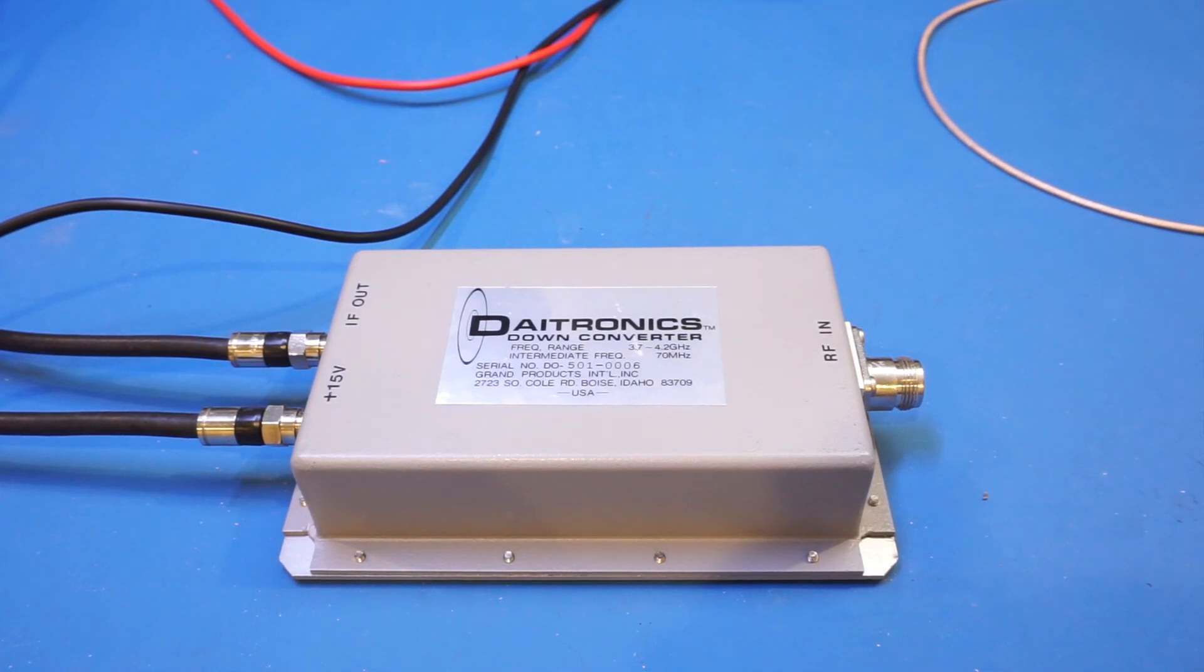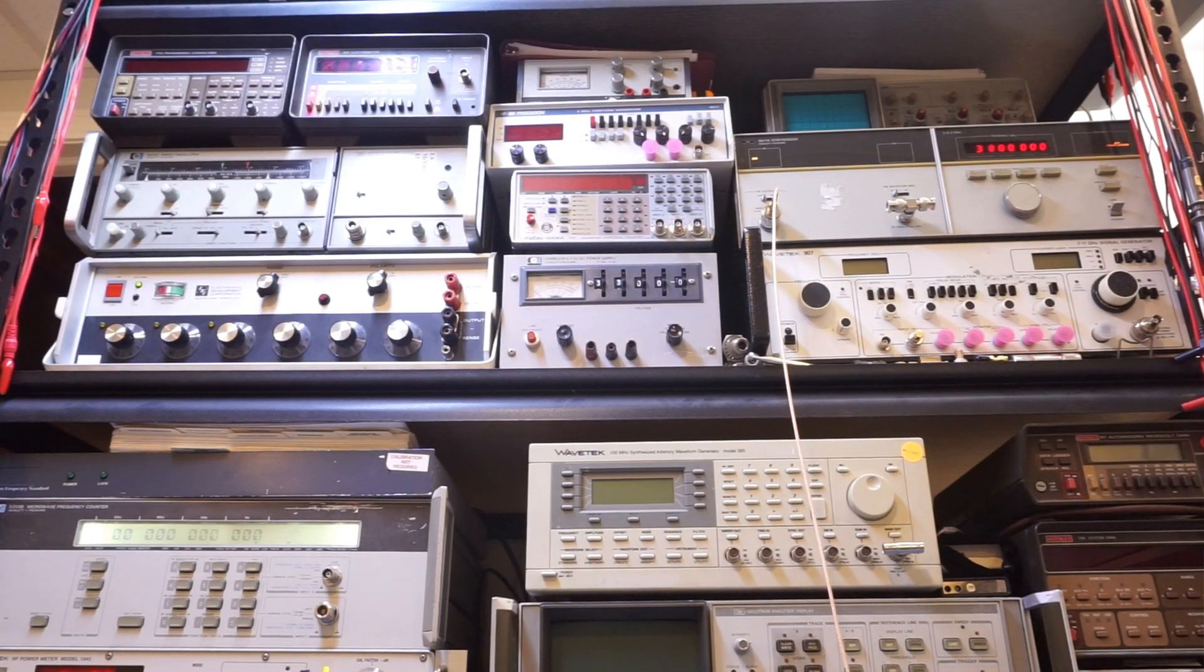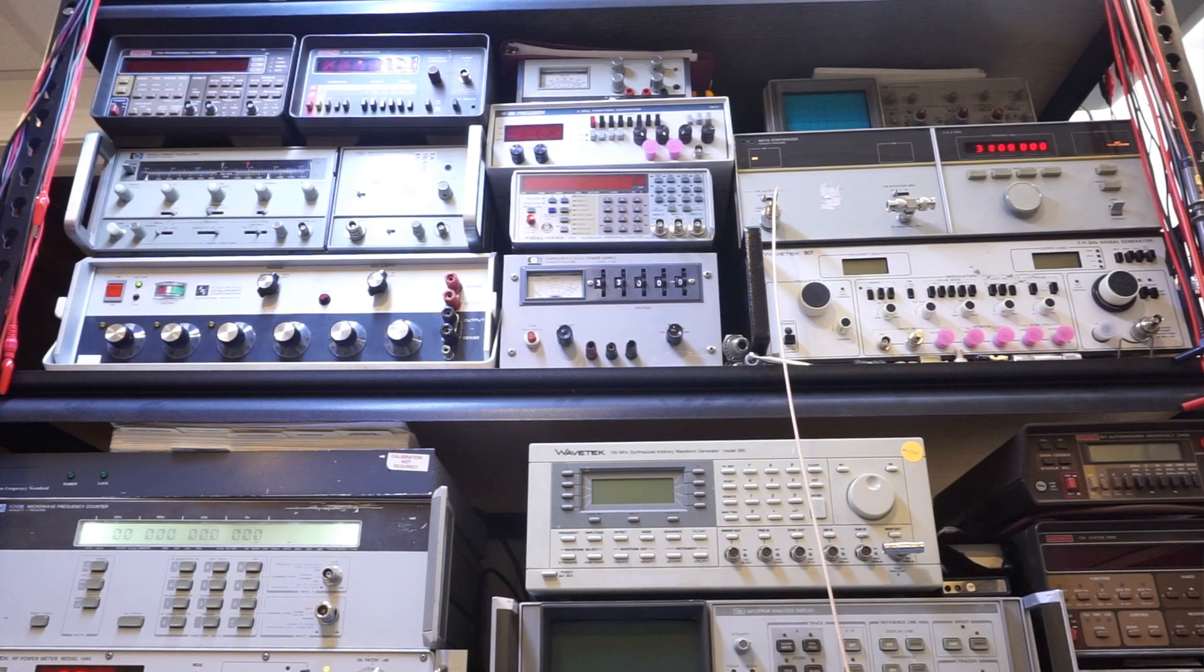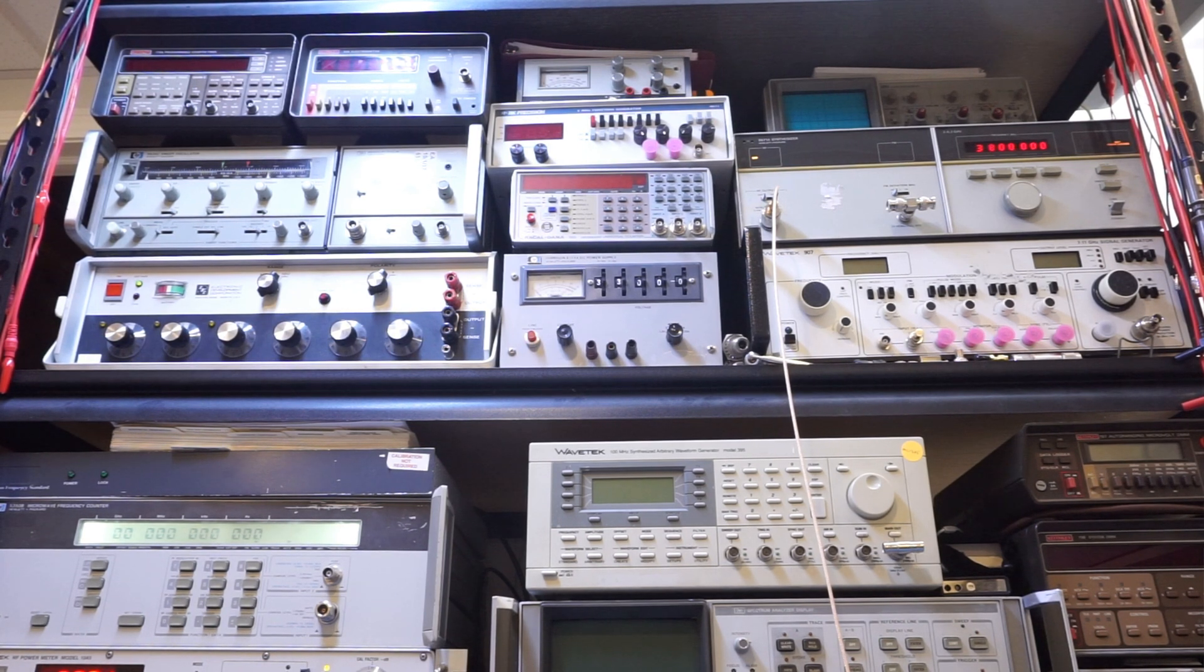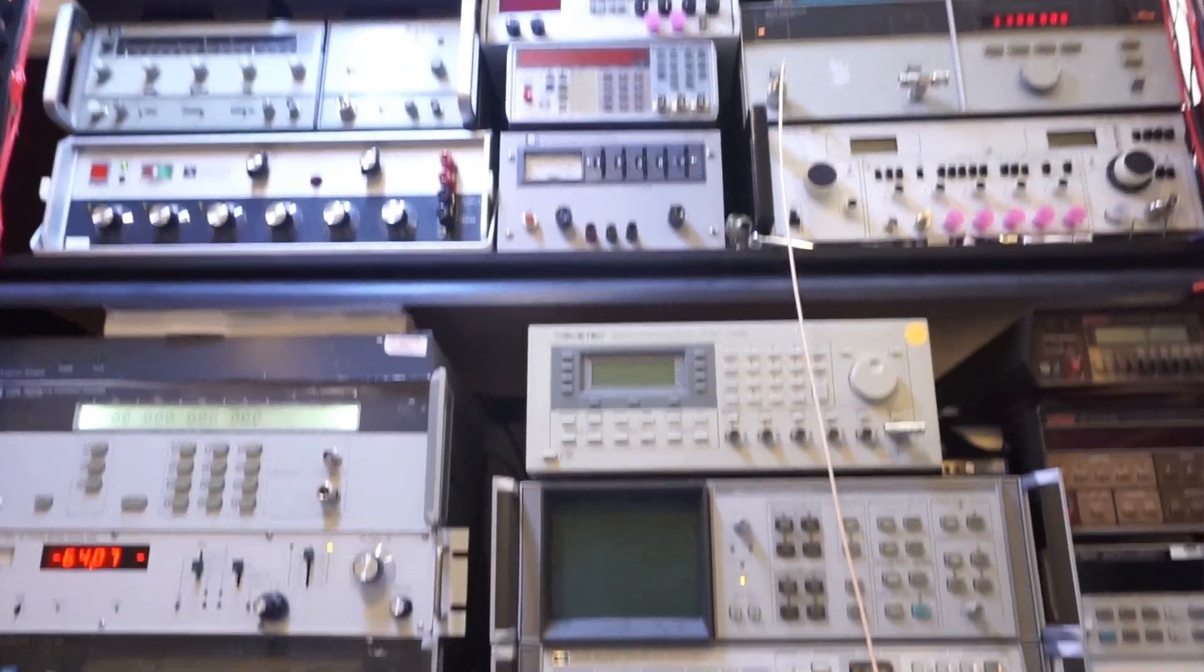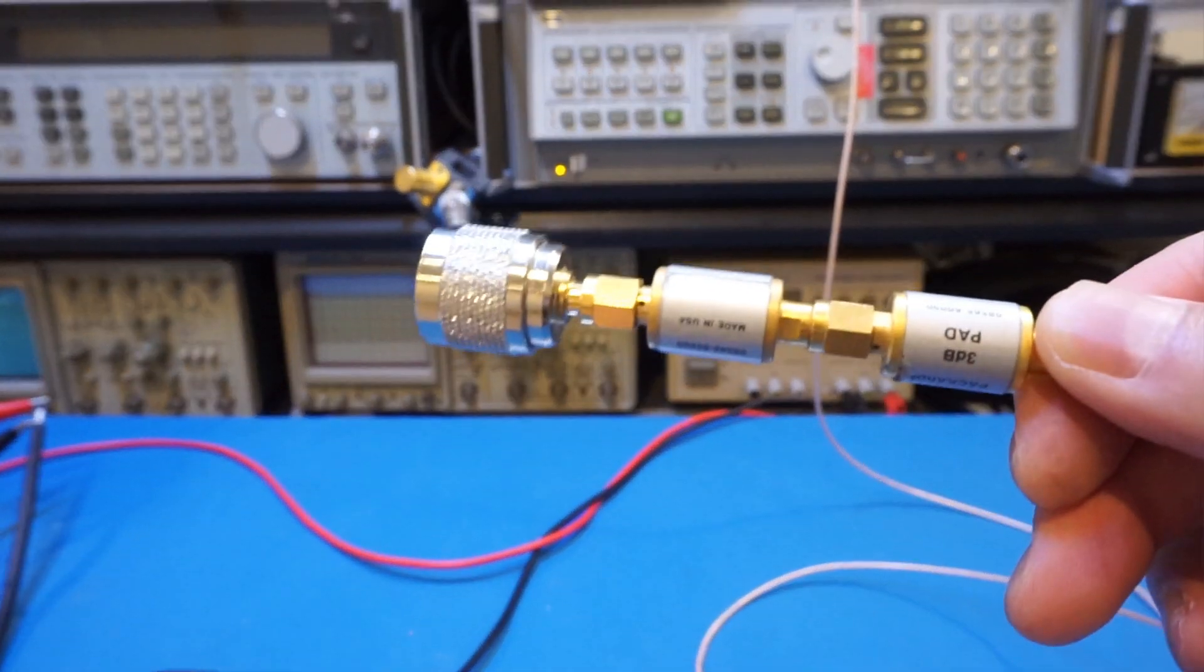To test this downconverter, we need an input signal somewhere between 3.7 to 4.2 GHz. So for that, I'm using my HP 8671A synthesizer, which is making noise out there. And right now, as you can see, it's set to an output frequency of 3.8 GHz. As we don't know the exact input frequency that is corresponding to the IF of 70 MHz, that's where I'm going to begin. One downside of that frequency synthesizer I'm using here is that the output is not leveled. So the output is actually quite high at that frequency range. For that, I'm using actually two pads here, three dB pads to take the power down a little bit.